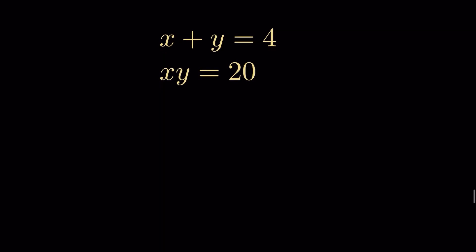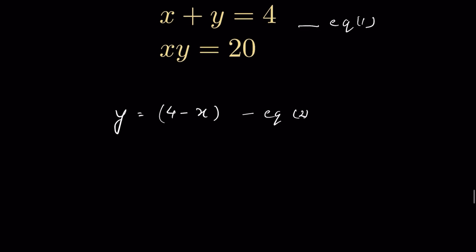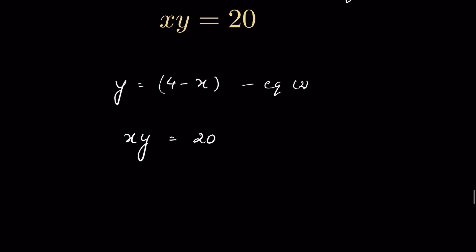If x plus y equals 4 and x times y equals 20, we have to find the value of x and y. This is equation 1. From here we can write y equals 4 minus x — let this be equation 2.